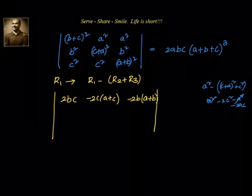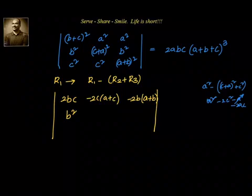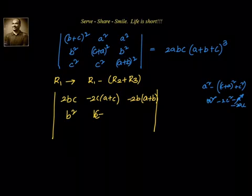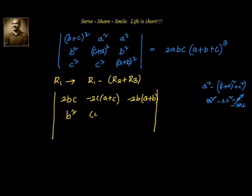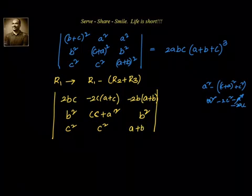We can verify: a² minus b² minus 2b² minus 2ab gives minus 2b(a+b). The remaining rows stay the same — we have b² in the second row, (c+a)² in the second position, then c², c², and (a+b)² in the third row.